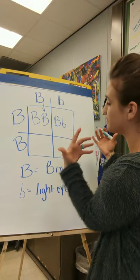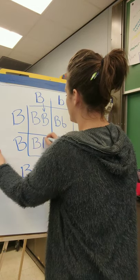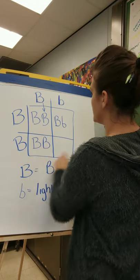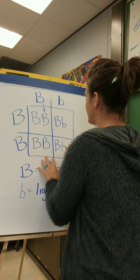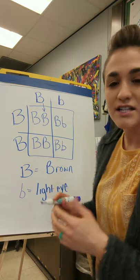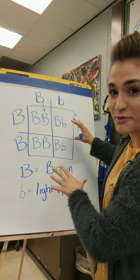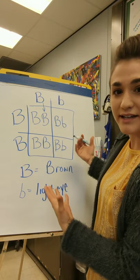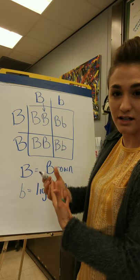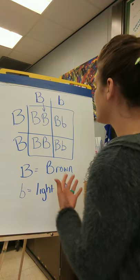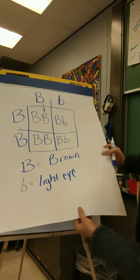The remaining two cells give us a capital B from mom paired with capital B from dad, and a capital B from mom paired with a lowercase b from dad. So there is a 100% chance that all offspring will have brown eyes, but a 50% chance that they will be carriers for light-colored eyes.